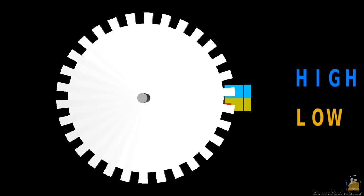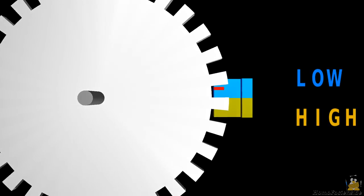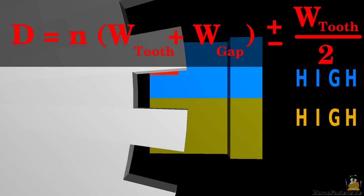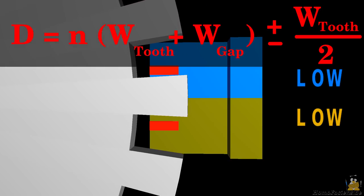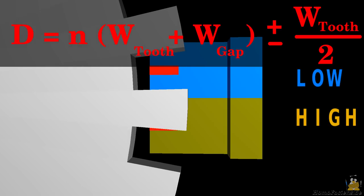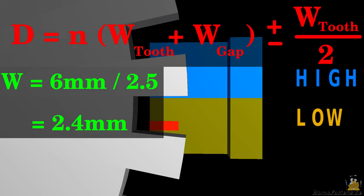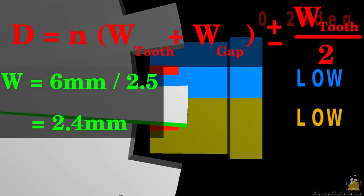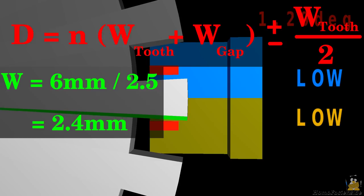As explained in a previous video, tooth width and sensor distance must meet a certain condition. The second sensor must be an integer of the tooth and gap width plus or minus half a tooth width apart from the first one. If the distance between the sensors is given, we can in turn calculate the tooth width, the resulting minimal width is 2.4mm.